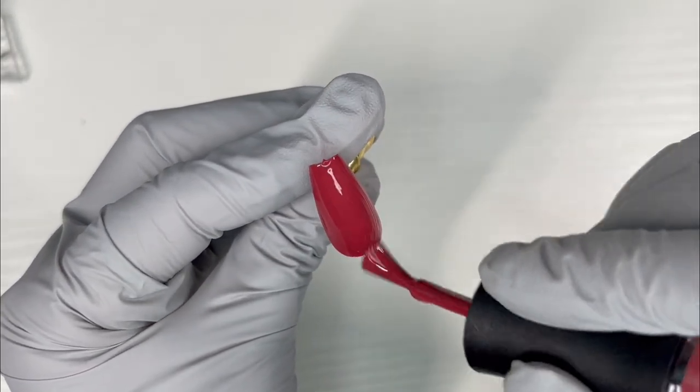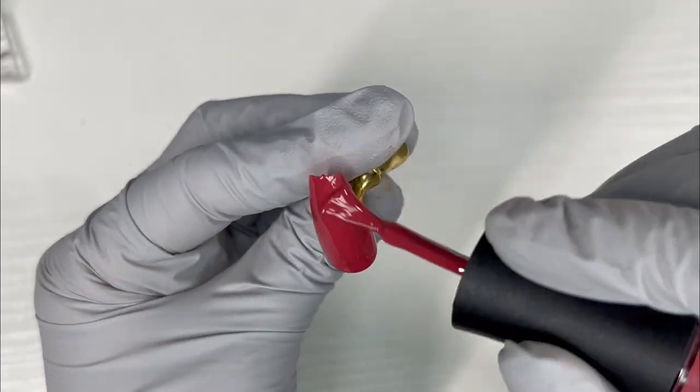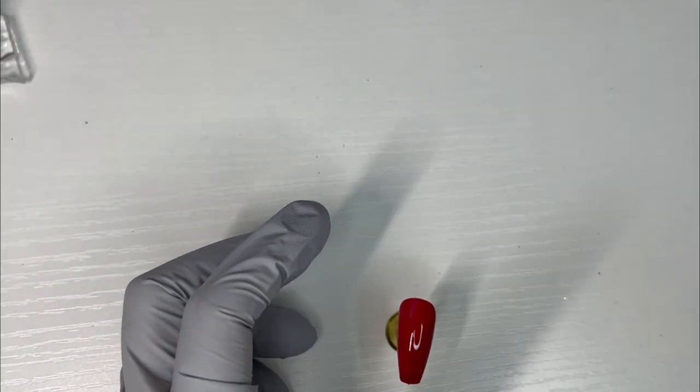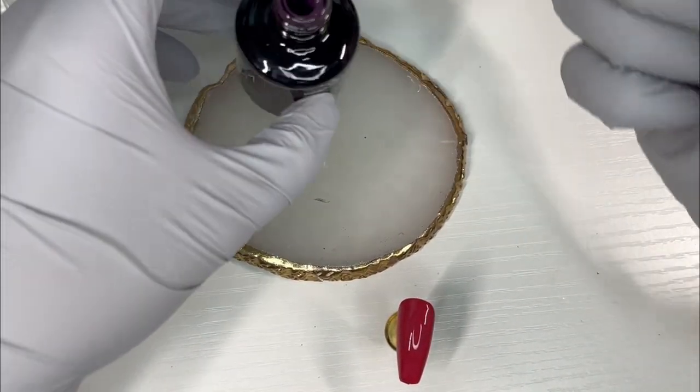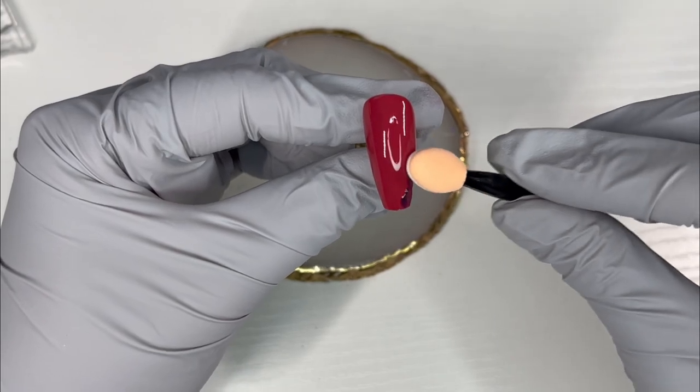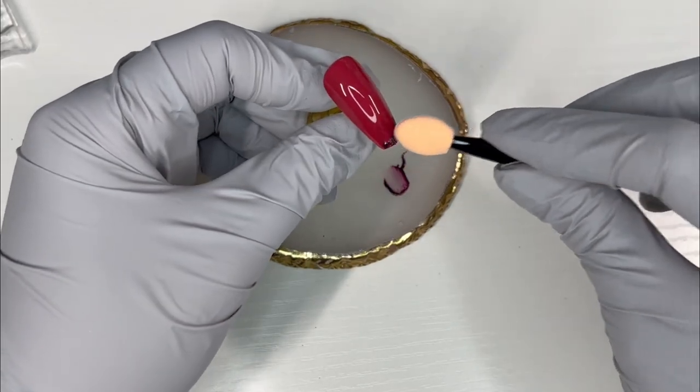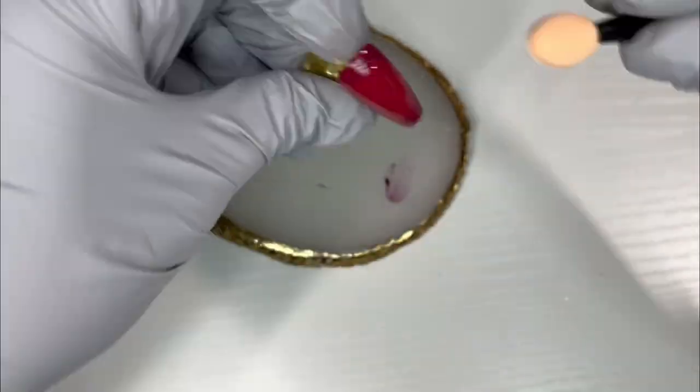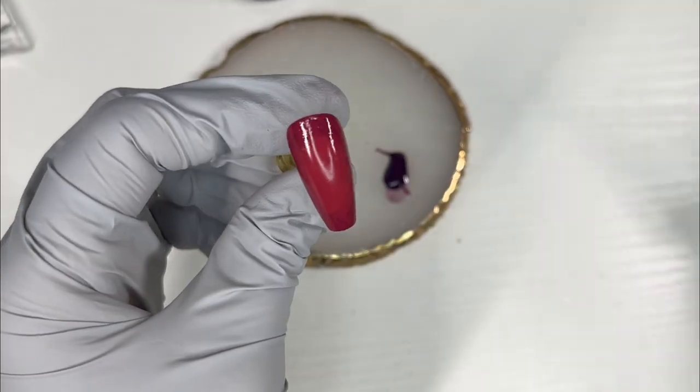Isn't this such a pretty color? I don't even know how to explain it. It's like a muted red. Cure that for 30 seconds. Now I'm going to take an eyeshadow applicator and put shadows on the side here, and then I'm going to blend it out on the edges. I'm gonna keep doing that until I like the opacity of shadows.